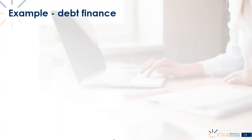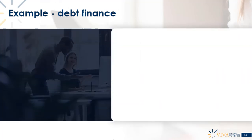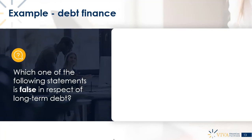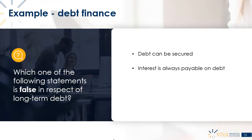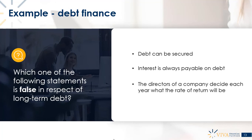There's a little example on debt finance. We're asked to pick out the false statement in respect of long-term debt. Statement one: debt can be secured. Statement two: interest is always payable on debt. Statement three: it is the directors of the company who decide each year what the rate of return will be — specifically, the directors of the company receiving the cash from the debt decide each year what the rate of return will be.